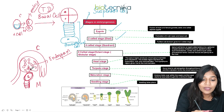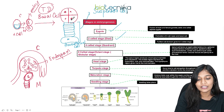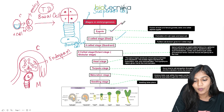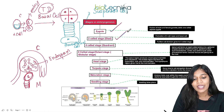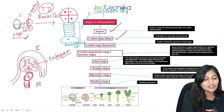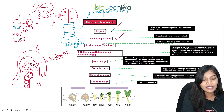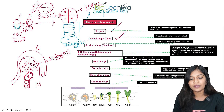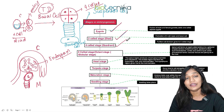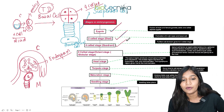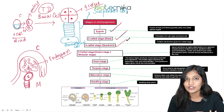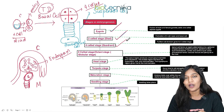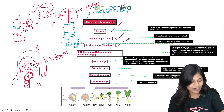We now have a four-cell stage embryo called the quadrat. Next we will talk about how an eight-cell stage is formed, how a heart shape is formed, and how a torpedo stage is formed.